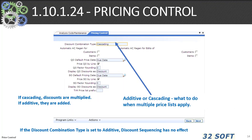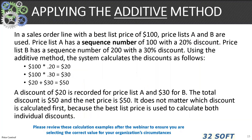As with all things in QAD, our discussion of pricing should probably start with price controls. Let's look at 1.10.1.24, pricing control for sales orders, quotes, and RMA issues. The first field we encounter is the discount combination type, which has to do with how multiple price lists are handled within QAD. The options are additive or cascading — if cascading, discounts are multiplied together; if additive, they are added together.